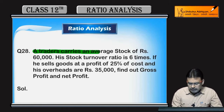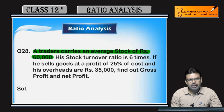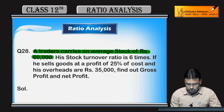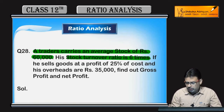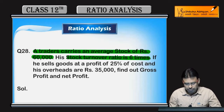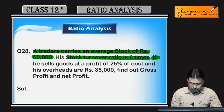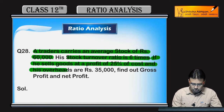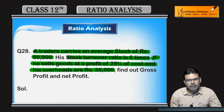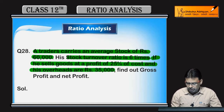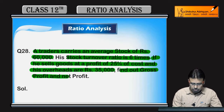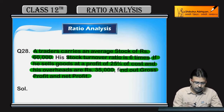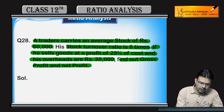A trader carries an average stock of Rs. 60,000. The stock turnover ratio is 6 times. He sells goods at a profit of 25% of cost, and his overheads — that means indirect expenses — are Rs. 35,000. We need to find out gross profit and net profit.